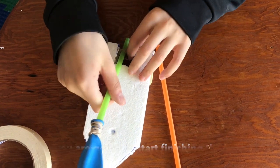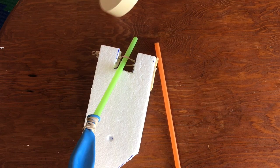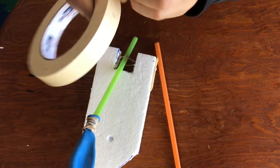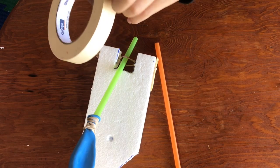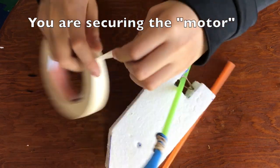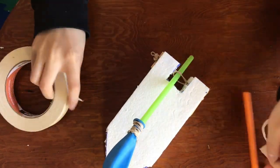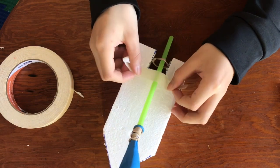Now you are going to start finishing your boat. Stick the straw through the rubber bands to secure it. Get some tape to make it stay better. You could put a few pieces of tape on it.